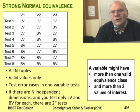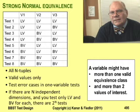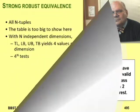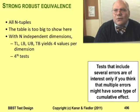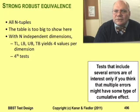Strong normal testing tests every combination of the valid case boundaries, which can be a lot of tests. Strong robust equivalence testing tests all the combinations of all the boundaries, valid and invalid. This is probably unrealistic and unproductive.